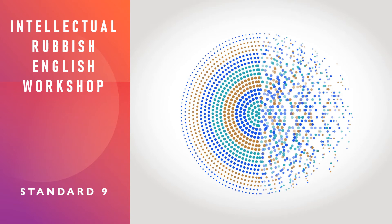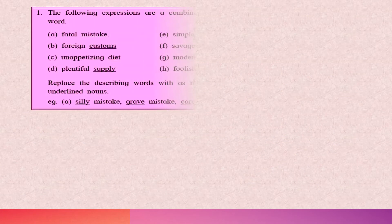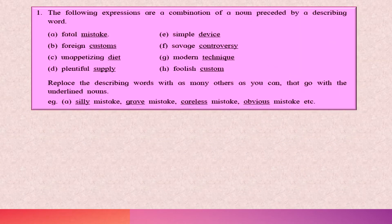Hello everyone and welcome to another English lesson. In this video we will be discussing the English workshop exercises of the lesson 'Intellectual Rubbish.' The following expressions are a combination of a noun preceded by a describing word or adjective. In this exercise you have to replace the describing word or adjective with as many others as you can.